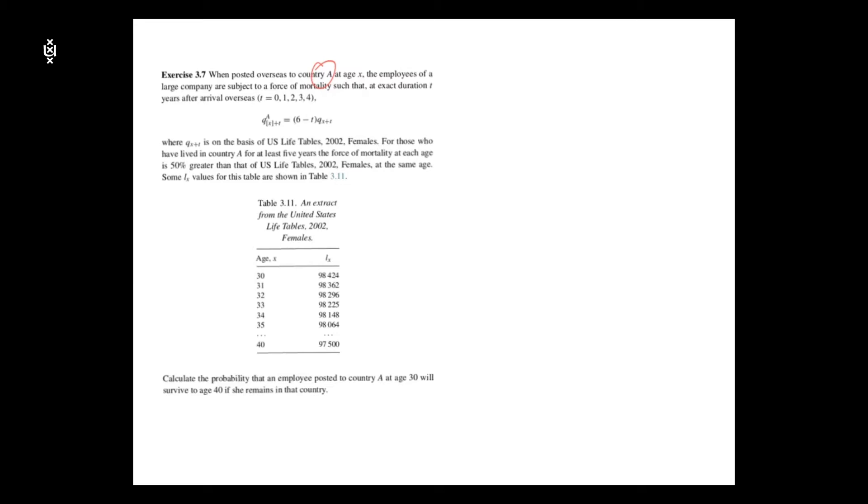In the first five years, the probability of dying within one year is related to the one from U.S. using this equation. And after the first five years, we know the force of mortality in country A is 50% greater than the one from U.S., and this table is the life table from U.S.